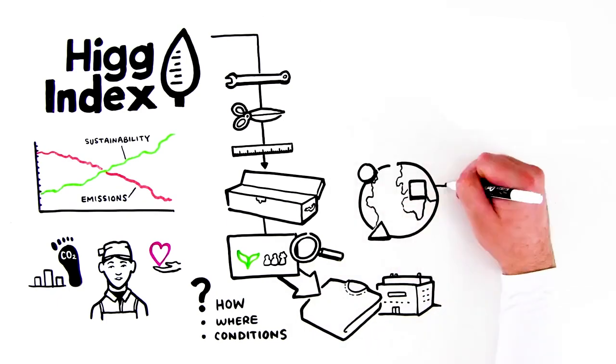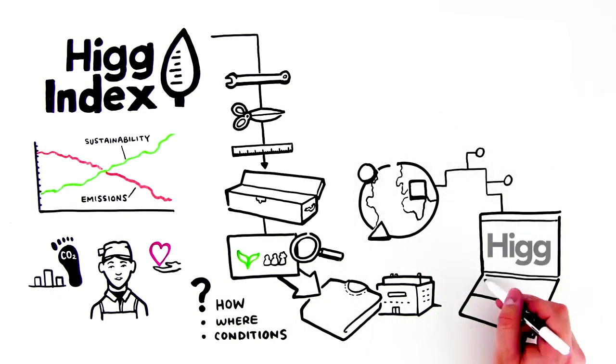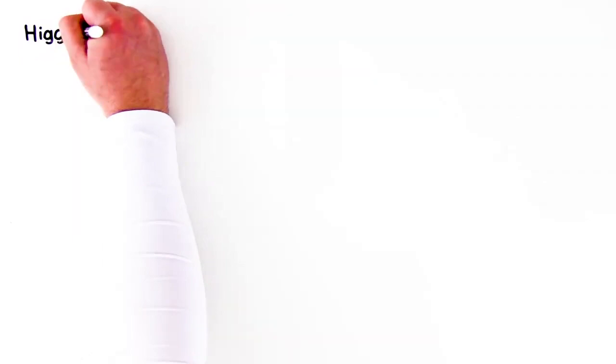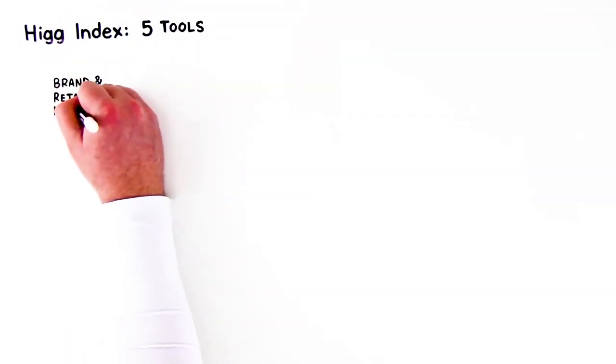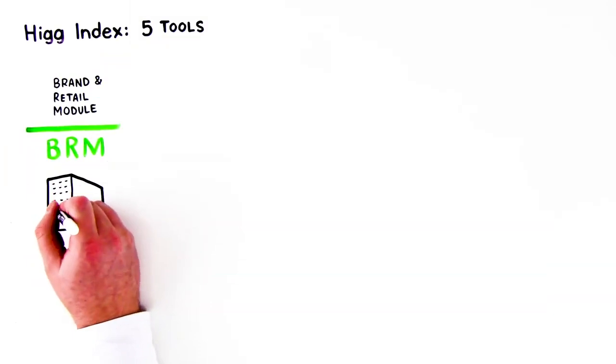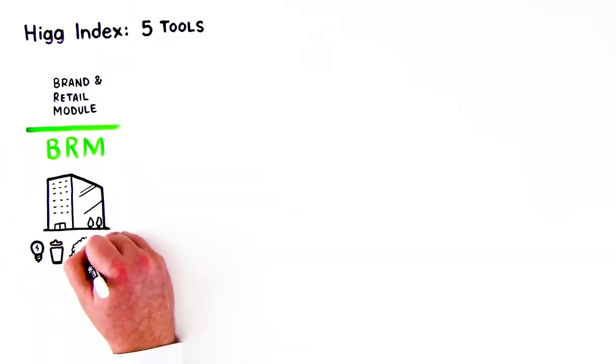Brands across the globe access the tools through the HIG software platform. The HIG Index is currently made up of five tools, including the HIG Brand and Retail Module, or BRM, which assesses social and environmental performance at the corporate level.